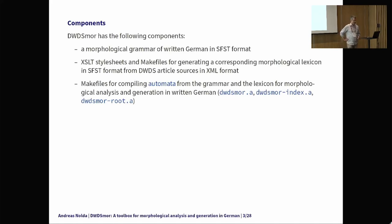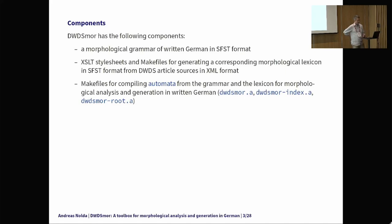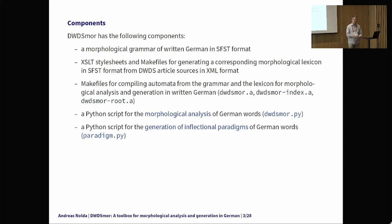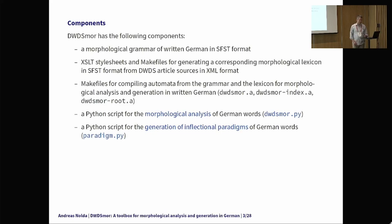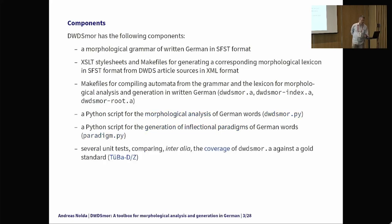DWDSmore has several components: a morphological grammar based on the S-Mor grammar in SFST format, a set of XSLT style sheets and make files for generating the morphological lexicon from the DWDS article sources, and make files for generating the automata from the grammar and the lexicon. There are three automata compiled, each with a specific use case. There are also Python scripts: one for morphological analysis called dwdsmore.py and another for generating inflectional paradigms called paradigm.py. Finally, there are unit tests for determining the coverage of DWDSmore against a gold standard corpus.